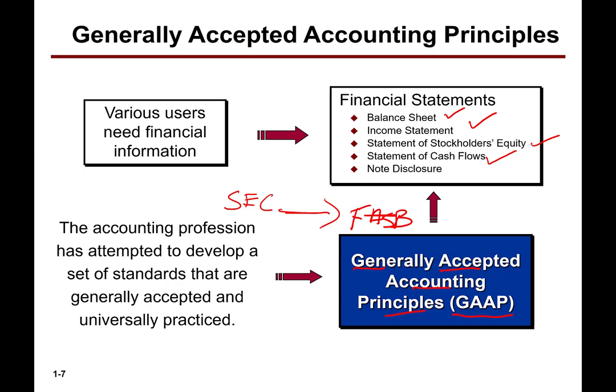The Securities Exchange Commission is the federal agency — what are they going to do? The SEC is the entity that oversees the FASB. When they created the SEC, they said the profession should be in a position to determine what the standards are. So even though the SEC has the legal authority to set the accounting standards, they have delegated that to the FASB. The Financial Accounting Standards Board promulgates generally accepted accounting principles, and GAAP is what we use to prepare the financial statements we'll be looking at in this class.